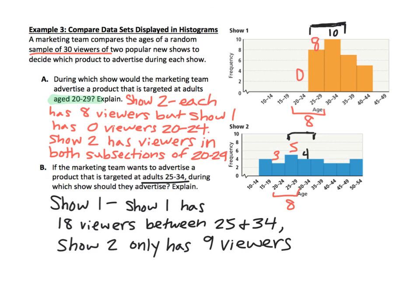So now we've looked at comparing data sets focusing on center and spread. In example one we used dot plots. In example two we compared box plots. In this third and final example we compared data sets using histograms. That is it for this lesson video. Thanks for watching. Bye.